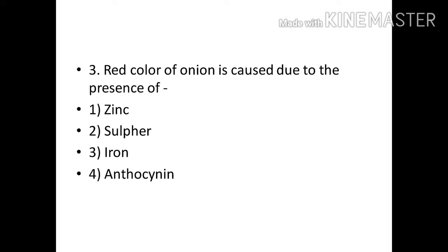Red color of onion is caused due to the presence of? Options: Zinc, Sulfur, Iron, Anthocyanin. Correct answer: Option D, Anthocyanin.